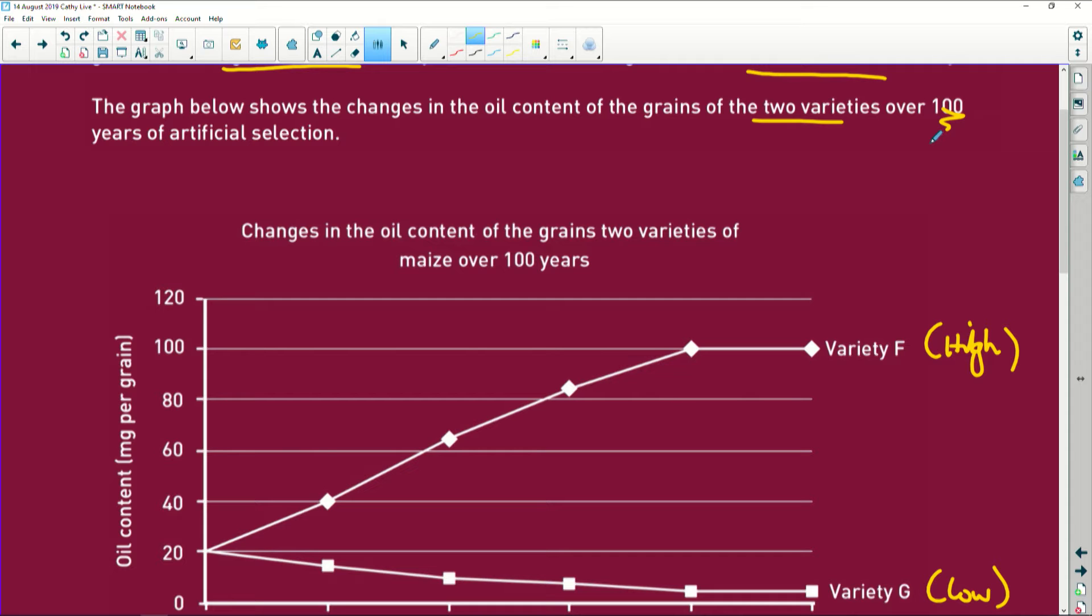Now remember, if they talk about a strain, you're talking about microorganisms. If it's a variety, it's plants. And if it's a breed, it's animals.